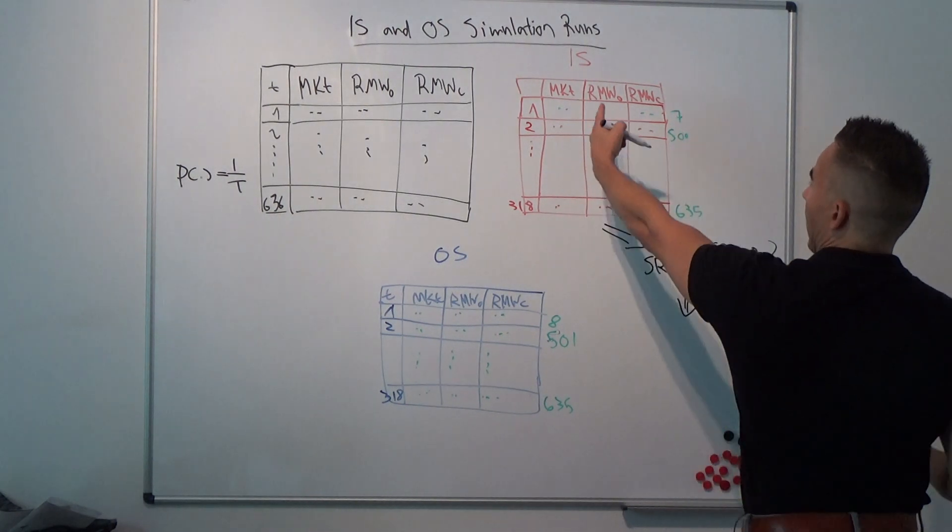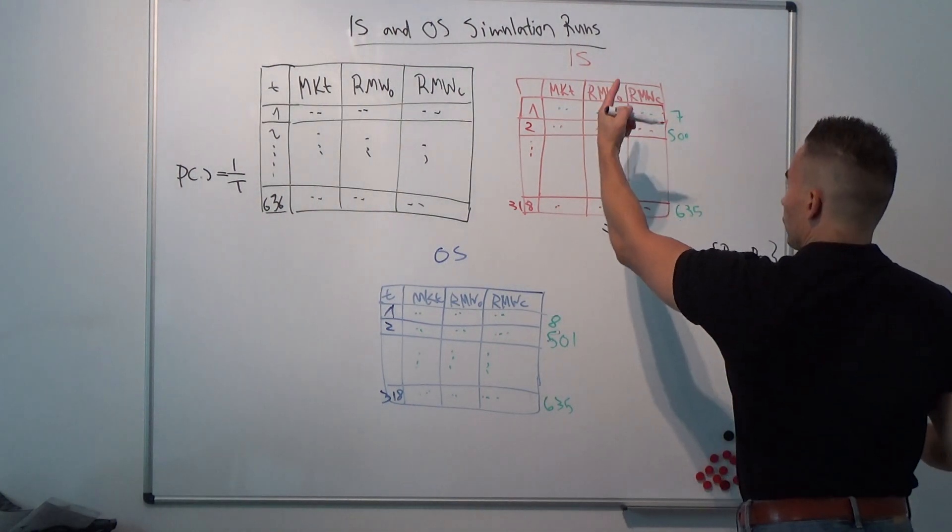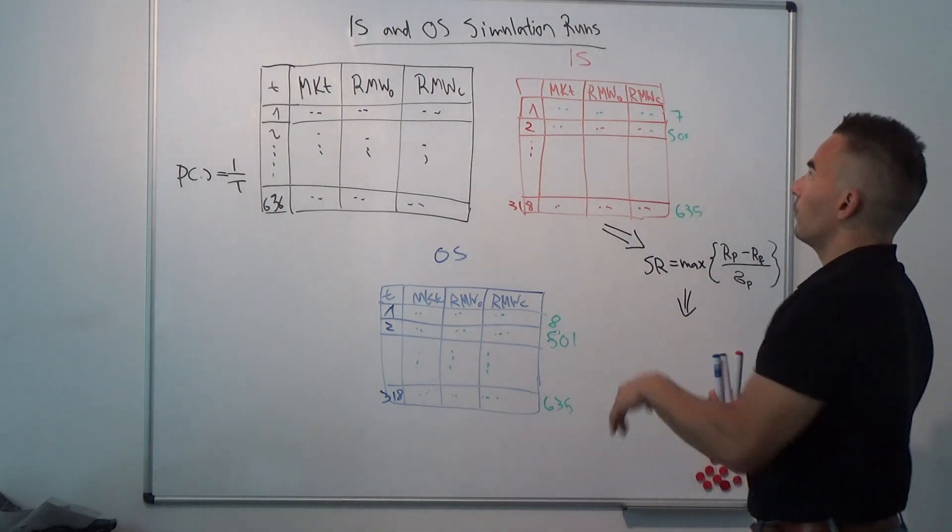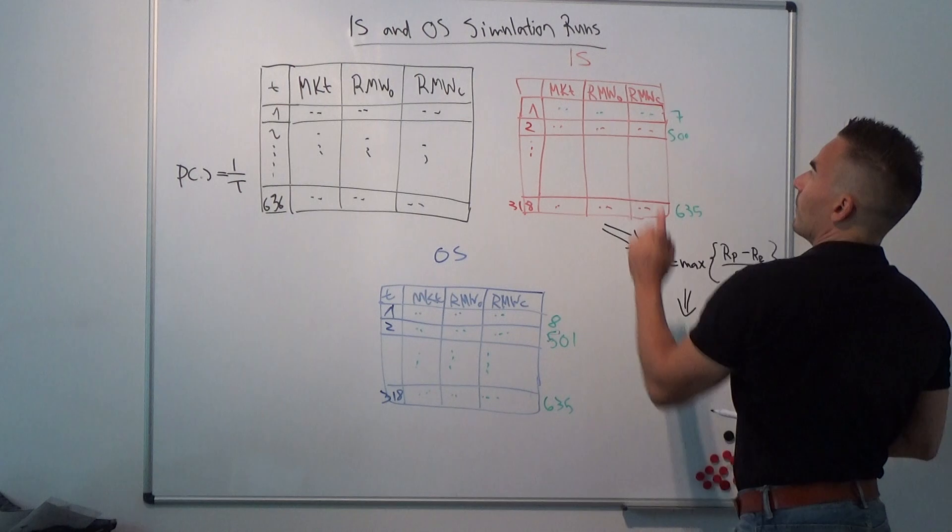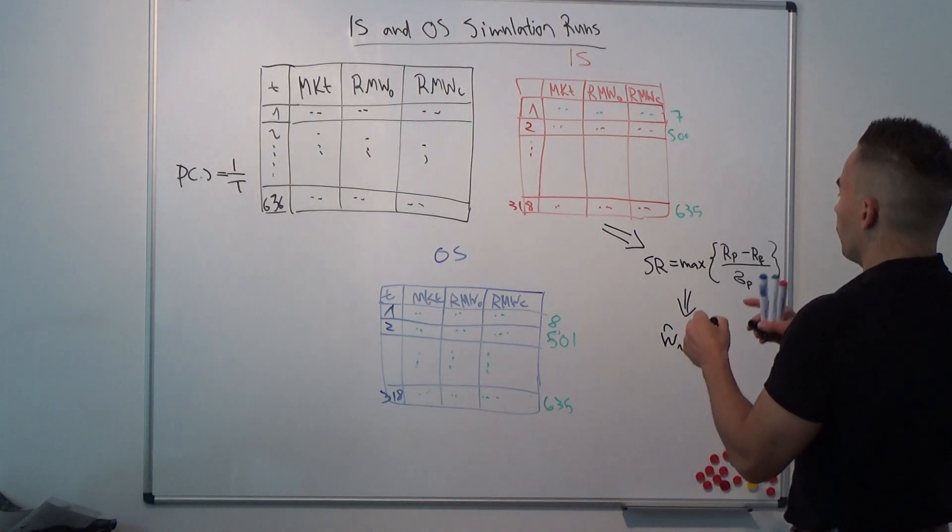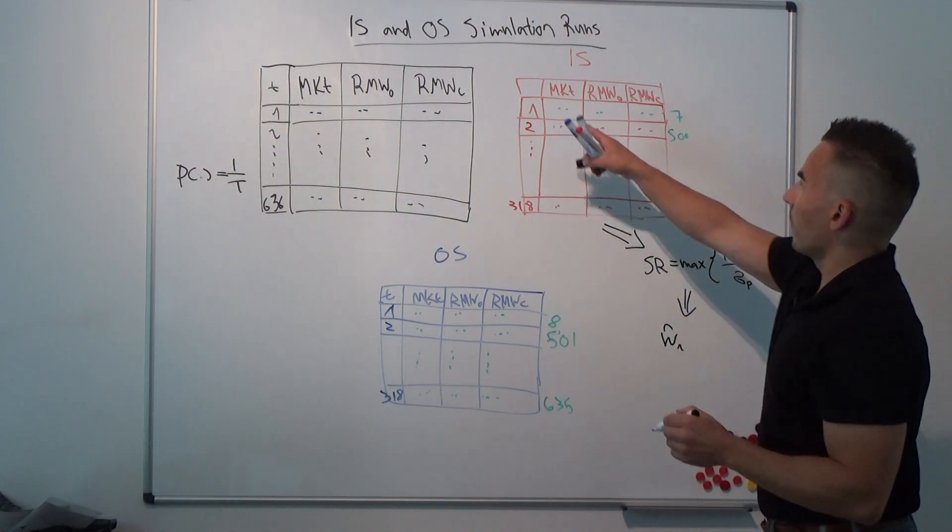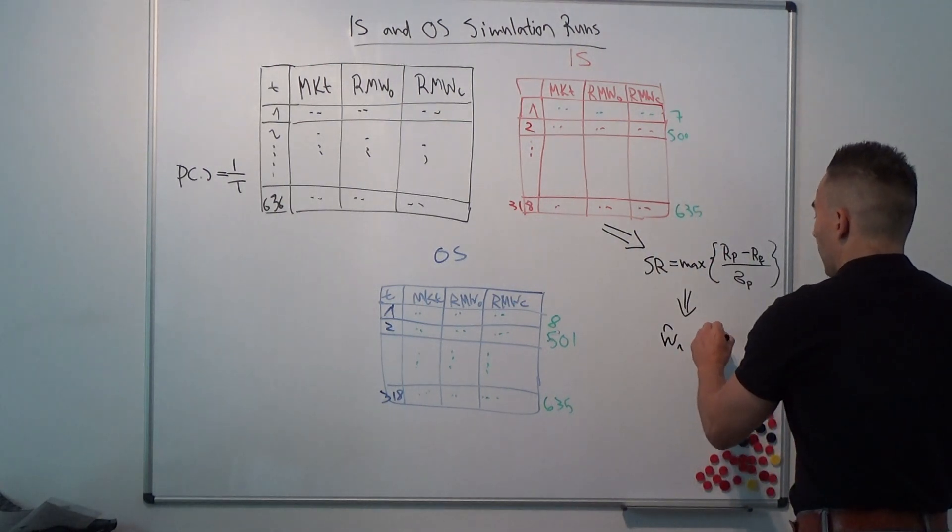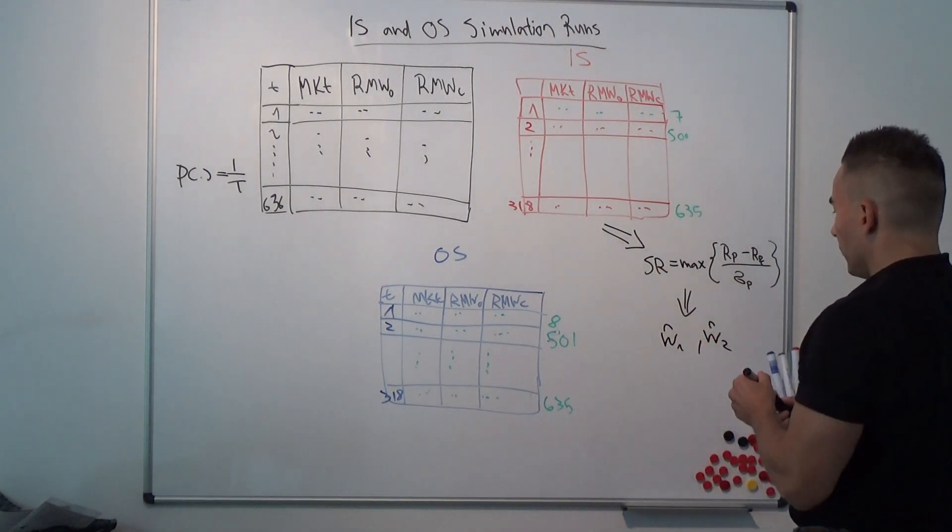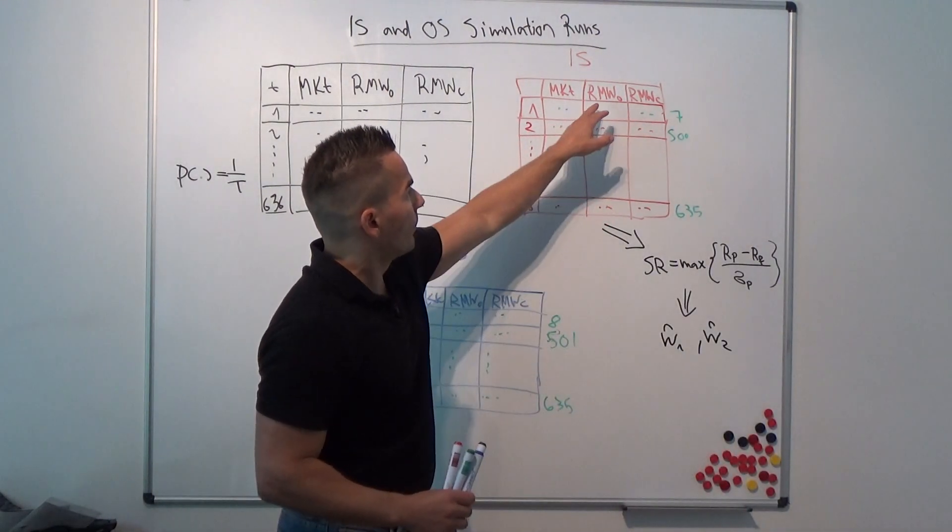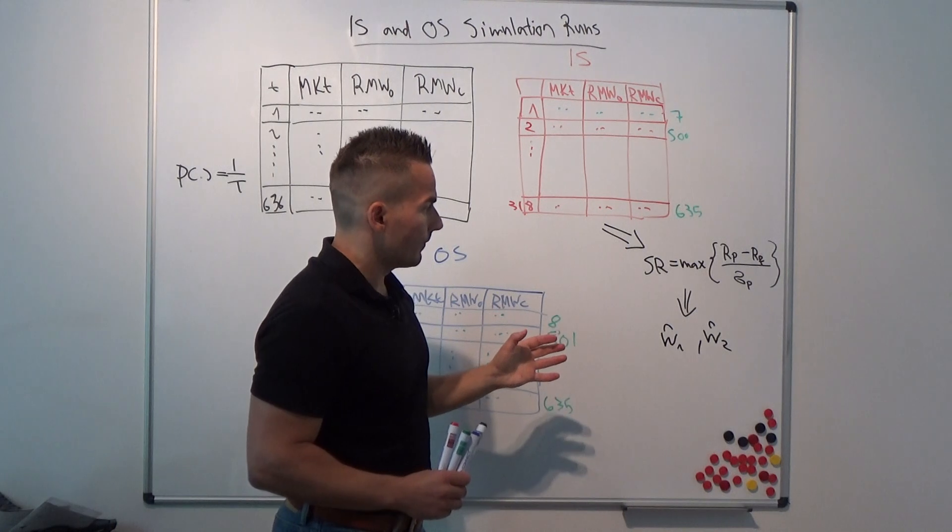Let's say if we want to compare the maximum squared Sharpe ratio for operating profitability and the market factor, we get two weights. The weight w-hat-1, the corresponding optimal weight for the market portfolio, and we get w-hat-2, which is the optimal weight for the operating profitability factor.